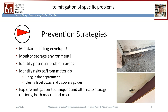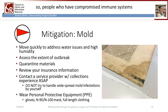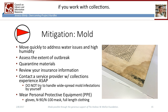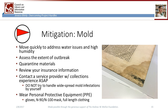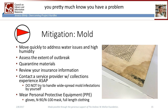All molds pose a health risk, and some people are more at risk than others — those with compromised immune systems, allergies to mold and mushrooms or penicillin, and anybody with respiratory issues like asthma. Probably almost all of you have some kind of mold sensitivity if you work with collections. Mold is first a sensitizer, which then becomes an allergen and can later become toxic. Typing mold takes time, is costly, and is often inconclusive or offers an incomplete picture. Knowing the kind of mold doesn't really affect the general course of action — if you have mold, you pretty much know you have a problem you need to deal with. The active mold needs to be rendered dormant, and dormant mold needs to be removed.